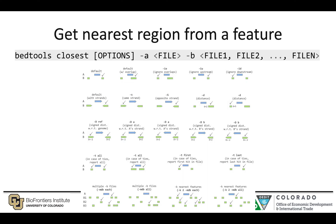Another subcommand similar to bedtools intersect is bedtools closest, which gives you the nearest region from a feature. For example, if you have ChIP-seq peaks from a ChIP dataset and want to find the closest peak in another file, you would use bedtools closest. I recommend going back to the bedtools documentation for details on running this subcommand in varying situations.